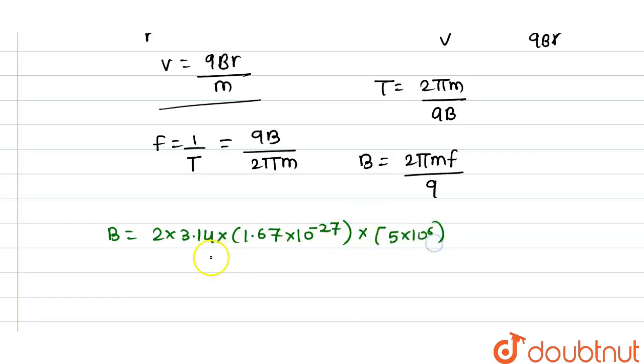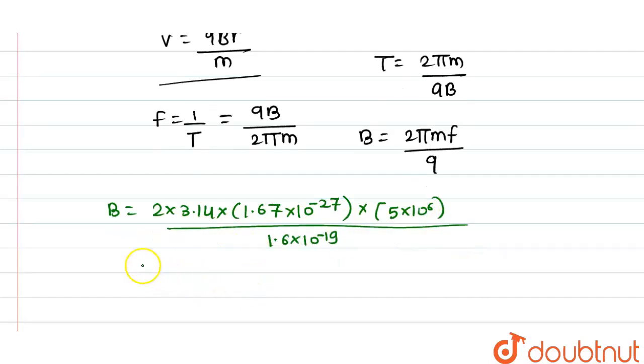Then the charge on proton is 1.6×10⁻¹⁹ coulomb. So if we calculate all these values, we will get the value of magnetic field as 0.327 Tesla.